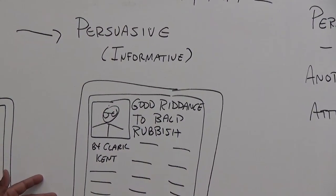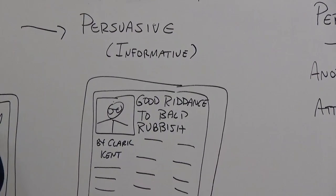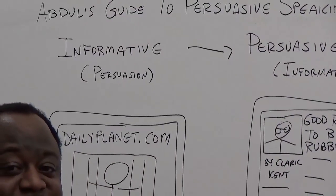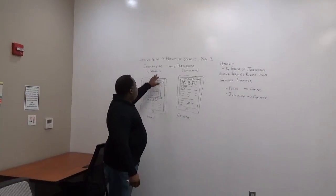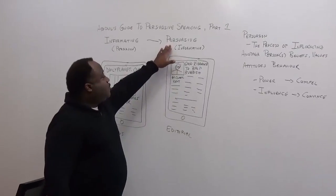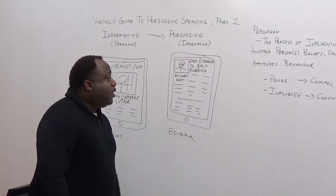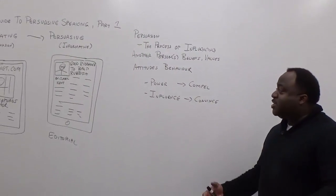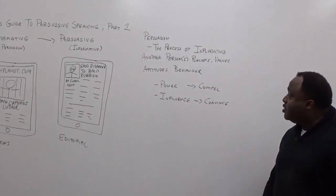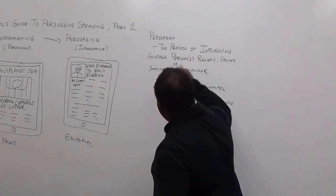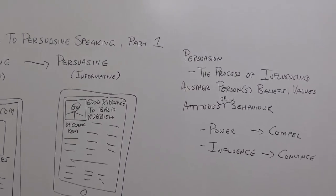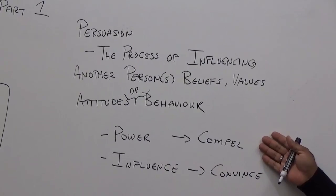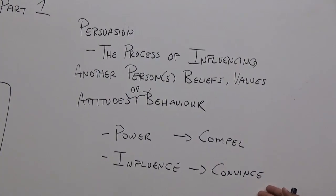Now we switch gears with persuasive speaking. What exactly is persuasion? The definition is pretty simple: it's the process of influencing another person's behaviors, beliefs, values, or attitudes in an effort to get them to do — or in the alternative, not to do — something. There are two ways we can exercise this persuasive ability. We can use power, where we compel somebody to do something, or we can use influence, where we convince them to do something.